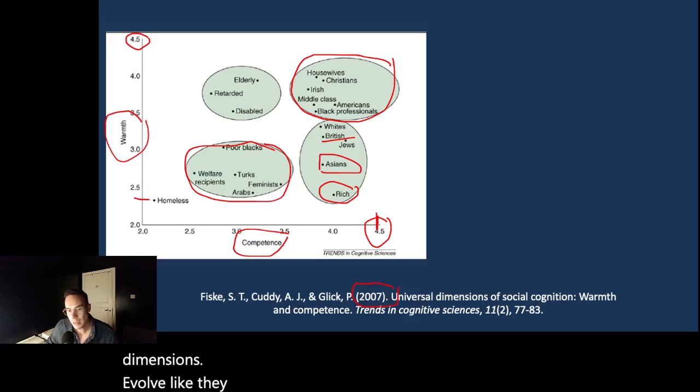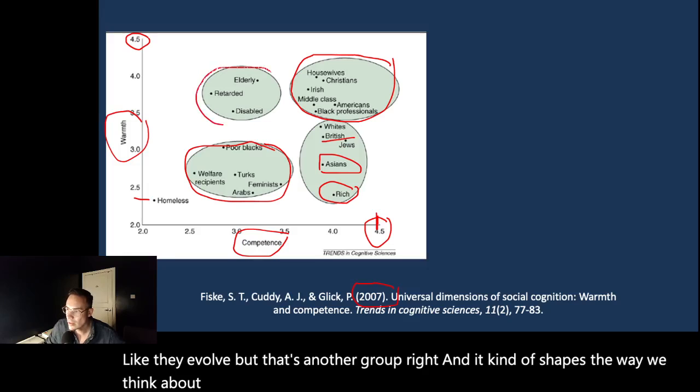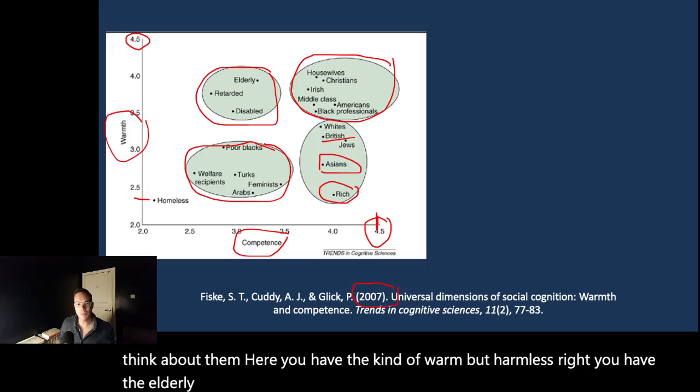But that's another group, and it shapes the way we think about them. Then you have the warm but harmless groups. You have the elderly, retarded, disabled. They're good people, but just completely incompetent.